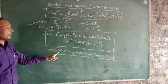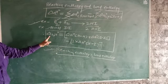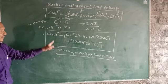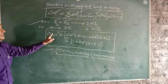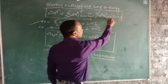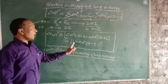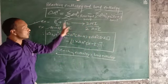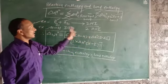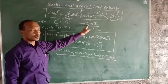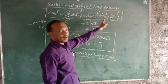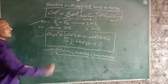So in this way, reaction enthalpy that is ΔrH° — where R stands for reaction — equals reactant bonds minus product bonds. The reactant bonds are H₂ and I₂, and the product bond is 2HI. So reactant bond minus product bond: this is the formula for ΔrH°.